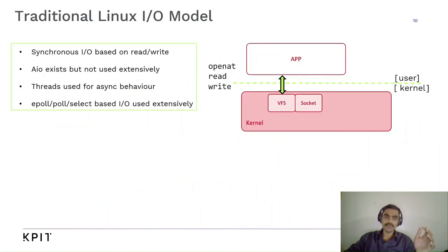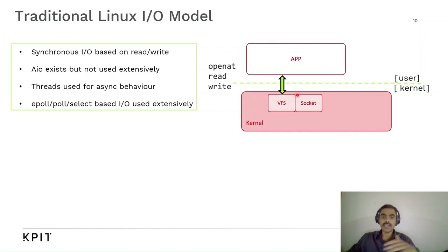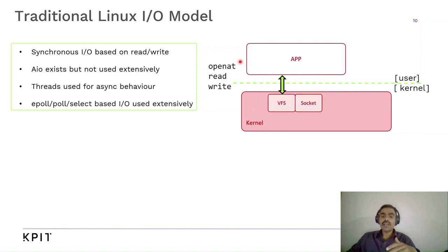Let's look at what IO-Uring is. Before we get to IO-Uring, we also have to look at the traditional Linux IO model. As you see in this diagram, the application requests the kernel using system calls like open, read, write, etc., which go to the VFS and the page cache, which decides whether it needs to go to buffer-based IO or character IO. And then it processes the IO. The read, write, etc. you see here is synchronous IO.